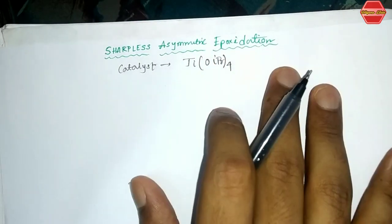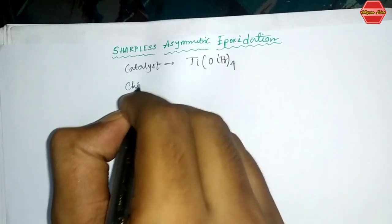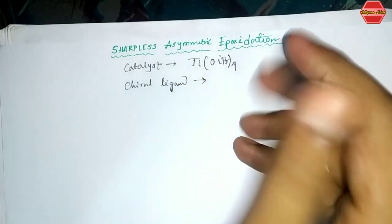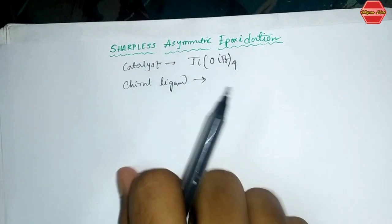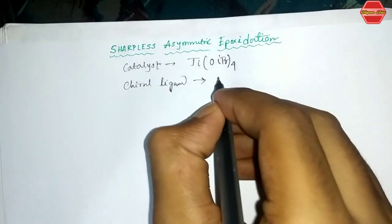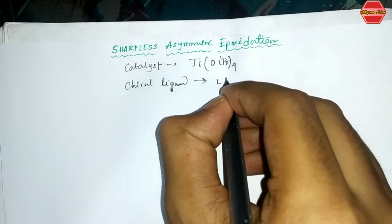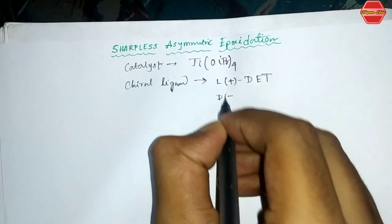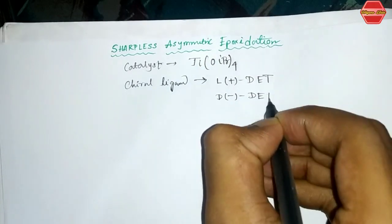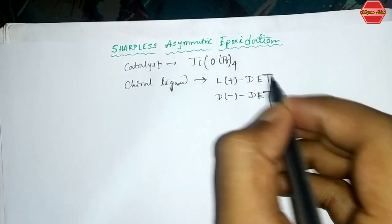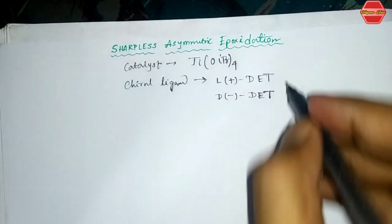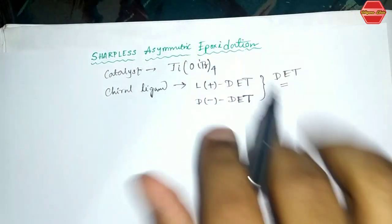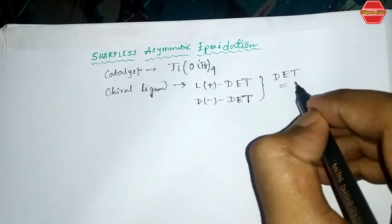The second important component is the chiral ligand. Two types of chiral ligands are generally used, called DET. DET stands for diethyl tartrate. I will show you the structures of diethyl tartrate — L(+)-DET and D(−)-DET.